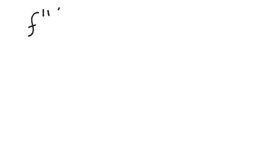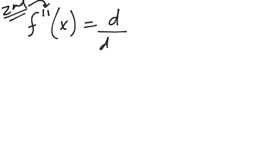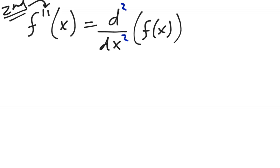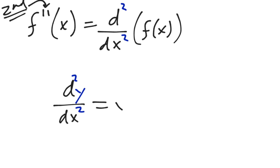Looking at notation: f double prime indicates the second derivative because there are two primes. You might also see it written as d squared over dx squared of f of x. With y notation it's d squared y over dx squared — the squared is on the d and on the x, not on y. An alternative is simply y double prime, meaning the second derivative of y with respect to x.